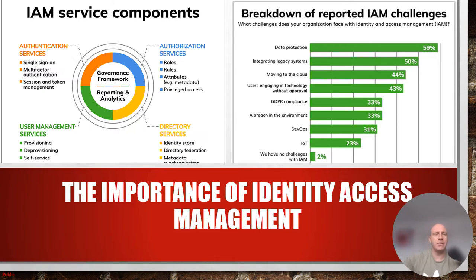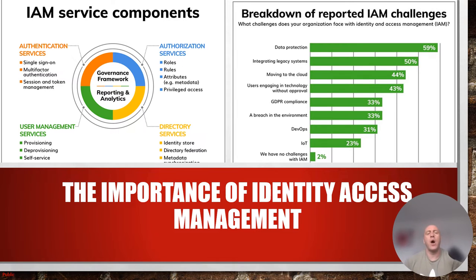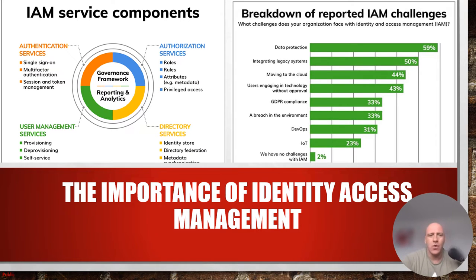Identity and access management service components are made up of four main components: authentication services, authorization services, user management services, and directory services. For those aware of the IAAA identity pillars, it's all about identity, authentication, authorization, and audit. These make up the core pillars of cloud security — identity and access management.